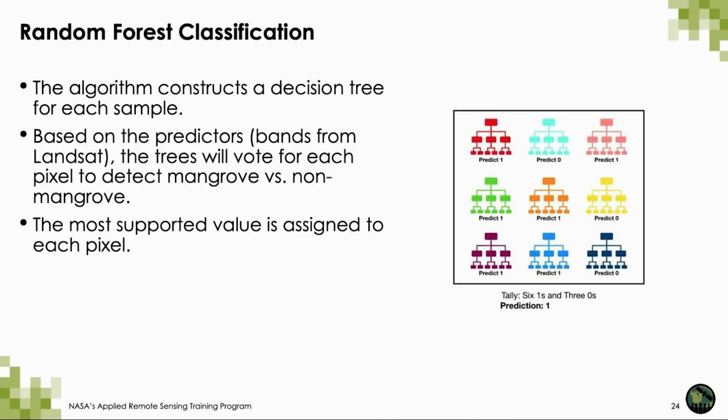You do not have to be an expert on machine learning to use it in your research. This is essentially a black box where we give input and training data to a machine learning algorithm and achieve some output. We can only observe what goes in and what comes out, and then manipulate those inputs until we get a result that we feel more accurately reflects the area of interest. The random forest constructs decision trees for each sample; based on the predictors, the trees vote for each pixel as mangrove versus not mangrove, and the most supported value is assigned.